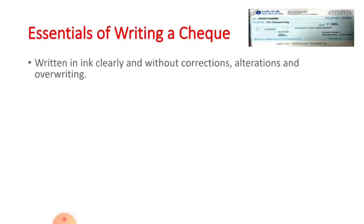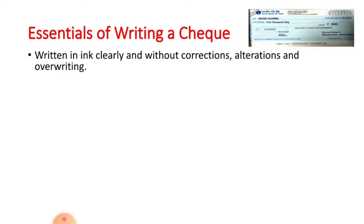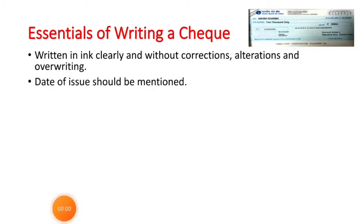These are the characteristics of a check. Now we are going to study about essentials of writing a check. The check has to be written in ink clearly without any corrections, alterations and overwriting. The date of issue should be mentioned on the check, as if the check is not deposited within three months of its issue then it becomes invalid and gets dishonored.